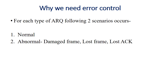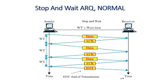So why exactly do we need error control? We need it for two basic reasons: one is a normal error, and another one is an abnormal one. Normal simply means, for example, a packet is not received correctly. Abnormal could be a damaged frame, a lost frame, or a lost acknowledgement.